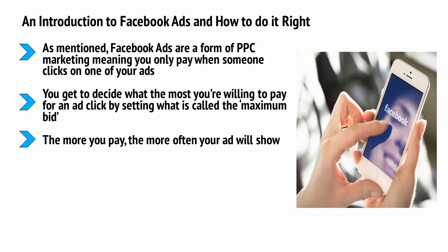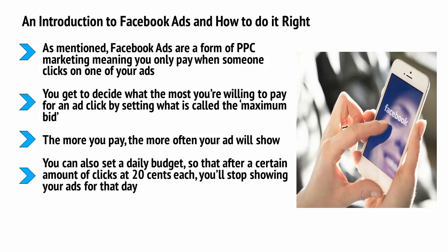You can show ads a lot for a low price if you pick a smaller niche with less competition — another reason not to pick fitness if you want to make money fast. You can also set a daily budget, so after a certain amount of clicks at 20 cents each, you'll stop showing your ads for that day. This makes it very easy to set a specific budget and avoid spending too much.